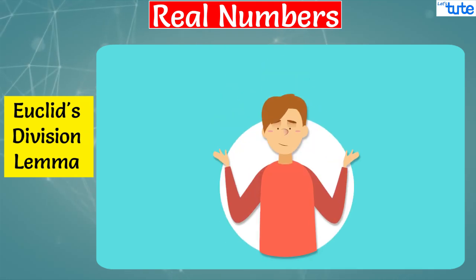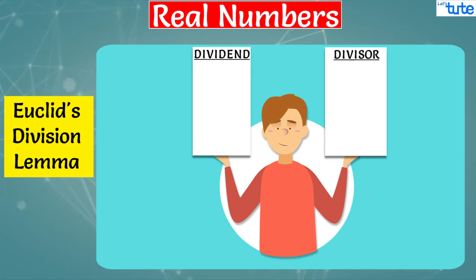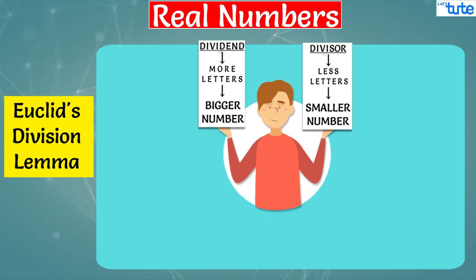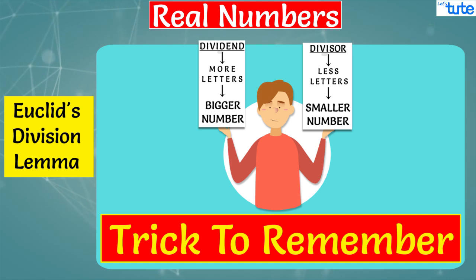Now friends, most of you get confused between dividend and divisor. So always remember that dividend has more letters, hence bigger number is dividend. And divisor has lesser number of letters, hence the smaller one is divisor. Please remember that this is just a trick to remember what is dividend and what is divisor, and this is not a mathematical formula.